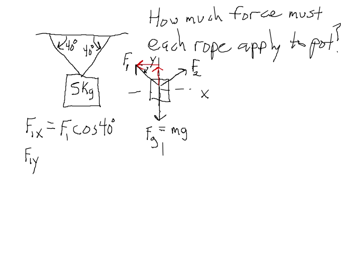We don't know what F1 is, so we can't go any further than that. The y component is opposite to the 40 degree angle. Let's check the signs. F1x is pointing to the left, which is the negative x direction, so I need to make that negative. F1y is pointing up, which is the positive y direction. That one is okay.